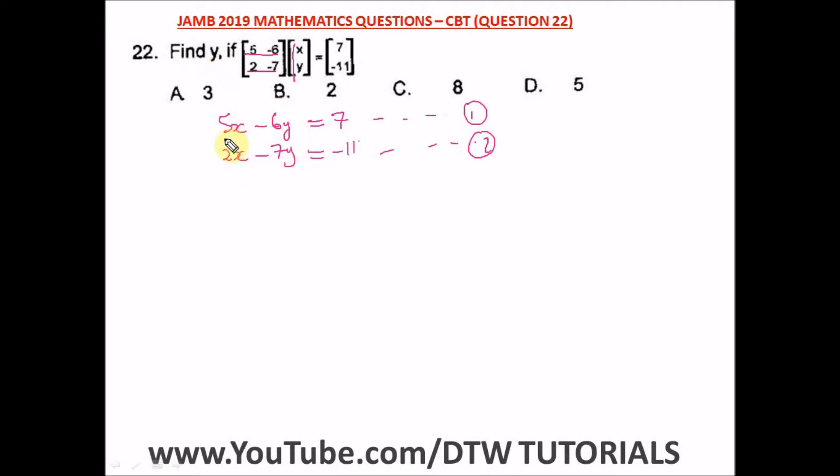So let's multiply throughout. We have 2 times 5x, we have 10x, minus 2 times 6y, we've got 12y. Five times 2x gives us 10x, minus 5 times 7y that will give us 35y.